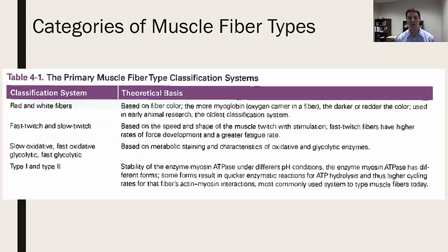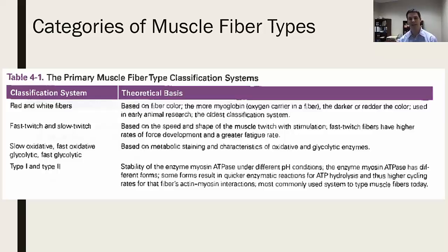A good example: comparing a dove muscle to a chicken muscle. Chicken is relatively sedentary and doesn't fly around a lot, whereas a dove is a migratory bird that flies long distances over long durations. The dove is a very dark, red meat animal, whereas a chicken is generally considered white meat. This difference in color is based on a specific protein called myoglobin — the more you have, the more oxidative that muscle can be, and therefore it appears redder.